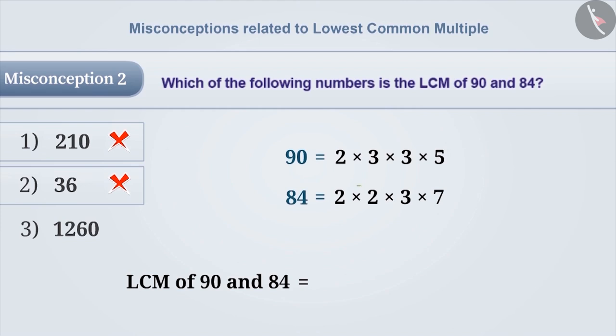Among the factors of 90 and 84, 2 has occurred a maximum of 2 times. That's why we write 2 into 2. Similarly, 3 has occurred a maximum of 2 times. So, we will multiply them with 2 into 2.